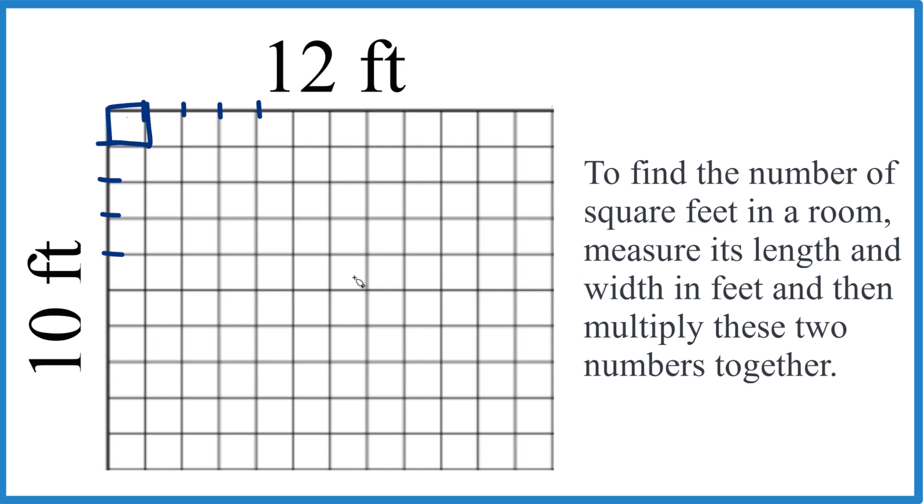If you count up all the blocks, there'll be 120 of them here. So the way we figure out how many square feet we have, we take 12 feet and multiply that by the 10 feet. We're just multiplying these two sides together to get the area.